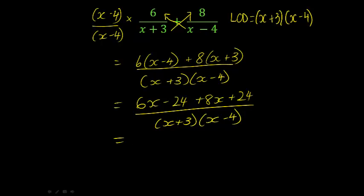I'm going to collect like terms. So 6x plus 8x is 14x, minus 24 plus 24 is 0. So I'm just left with this fraction here. And I haven't got anything common that I can cancel out, so I'm finished.